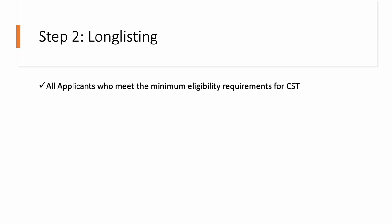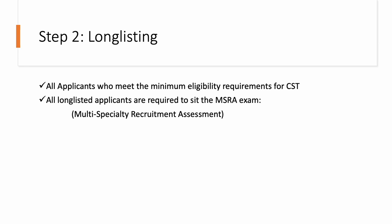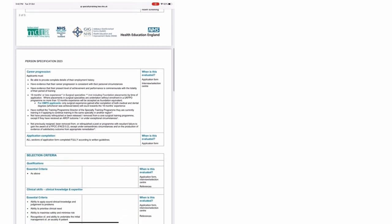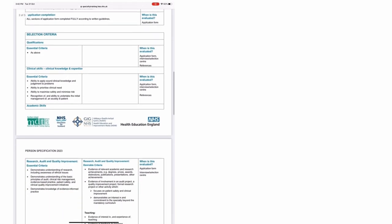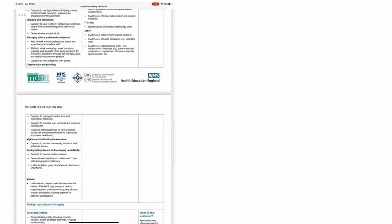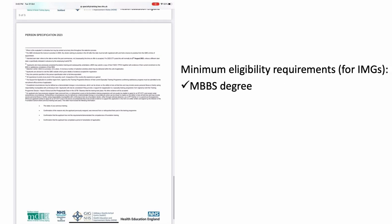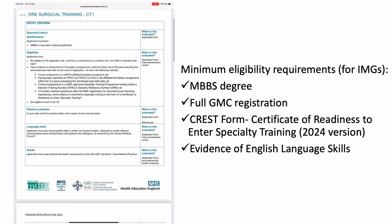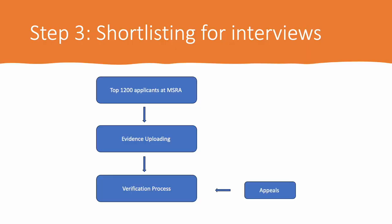All applicants who meet the minimum eligibility requirements for core surgical training are longlisted, and all longlisted applicants are required to sit the MSRA exam. The minimum eligibility criteria include your MBBS degree certificate, full GMC registration, the CREST form — which is the certificate of readiness to enter specialty training — and evidence of English language skills. All longlisted applicants will take the MSRA exam, which is a multi-specialty recruitment assessment exam that will form the basis of your shortlisting score.